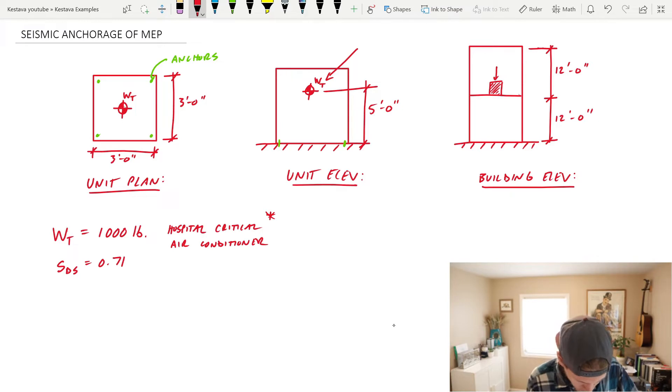The total weight of the unit is 1,000 pounds and I've denoted it as hospital critical air conditioner. So this is something that's going to be needed to remain operational in a post-seismic event, and you'll see why that criteria is important in a second.